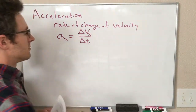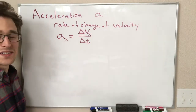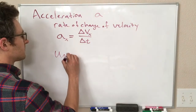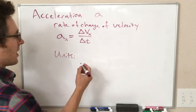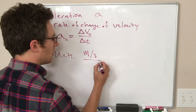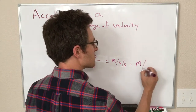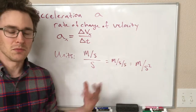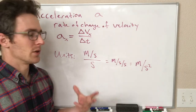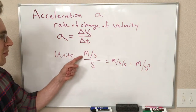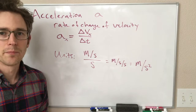Before we move on, I should mention the units of acceleration. The units of acceleration — we use a lowercase 'a' — must be units of velocity divided by units of time. So the units are meters per second over seconds, which gives us meters per second per second, or we can also write that as meters per second squared. Any of these three mean the same thing. The way to think about it: it's the number of meters per second your velocity is changing per second — that's why you have seconds squared in the denominator.